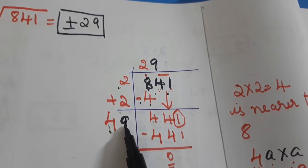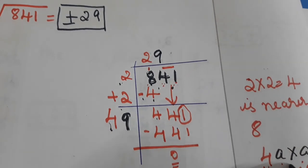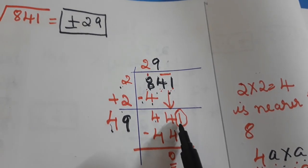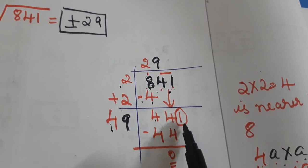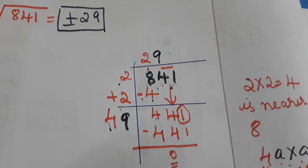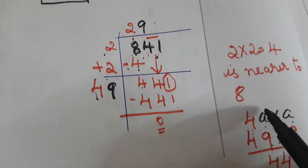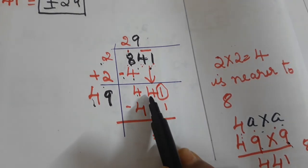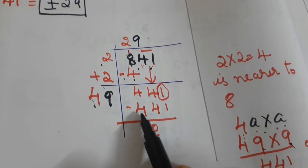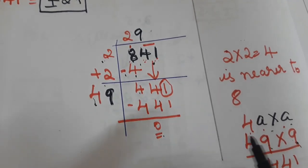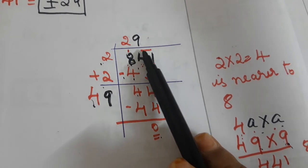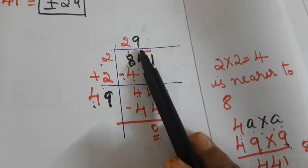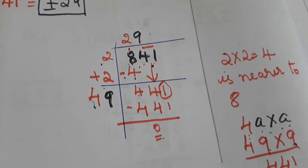With this four, any guessing number — 4_ × _ — the last digit should be 1. One times one is 1, and nine nines are 81, ones place also gives 1. So we take 9: 49 × 9 = 441, same number. Write the subtraction, result is zero, and write 9 on top. So answer is plus or minus 29.